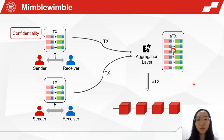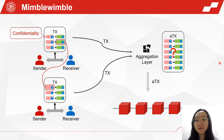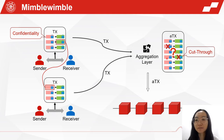MimbleWimble also has a beautiful feature called cut-through. This means that if a coin is spent by another coin, the two coins in the aggregate transaction will be cut, and the storage cost on-chain will be saved.